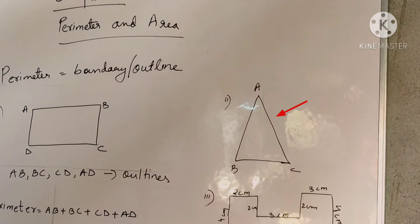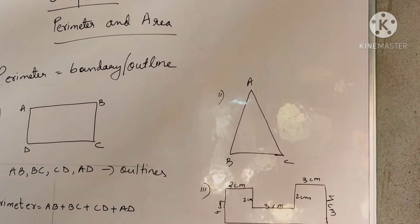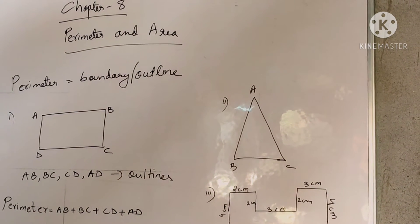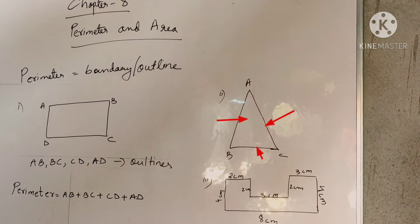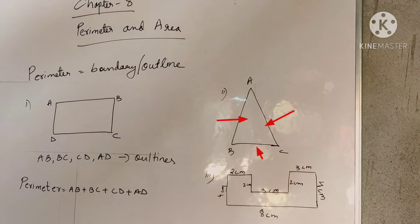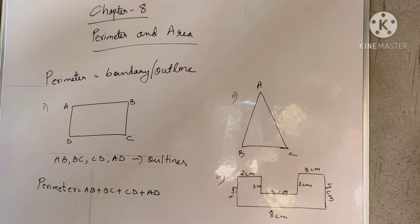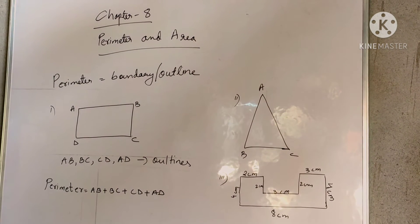Now you see figure number 2, the shape given is a triangle. So in this figure 2, your AB, BC, and AC will be your outline or boundary of this triangle, or you can say perimeter of the triangle.